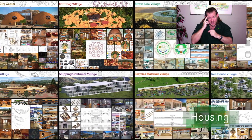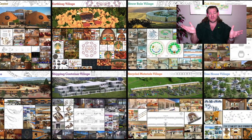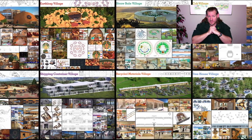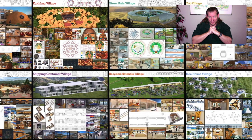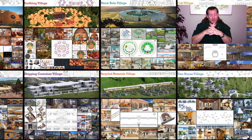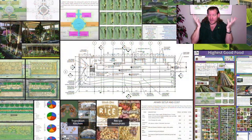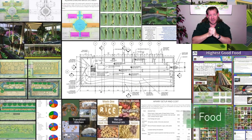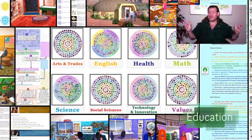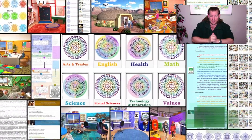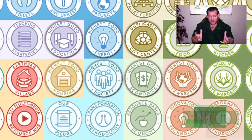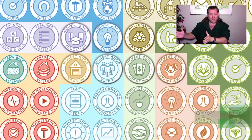One Community is bringing together people with the consciousness and the desire for the highest good of all life on the planet to build sustainable and self-replicating teacher demonstration hubs as a pathway to global sustainability. This is our December 26th weekly progress update. Today's topic is open source eco village construction. We divide eco village construction into two different categories: the physical foundations of sustainability and the emotional foundations of sustainability.